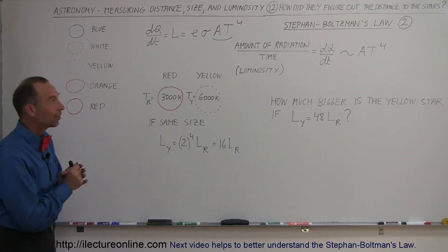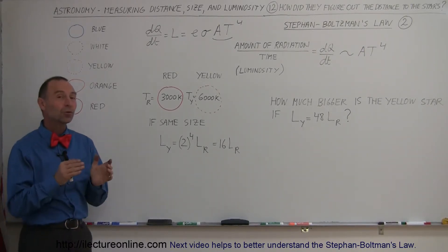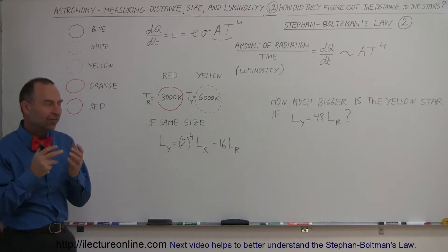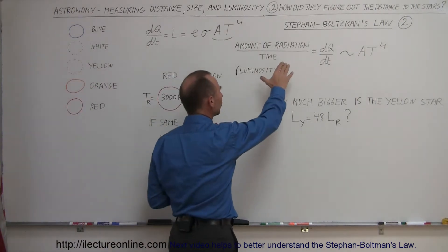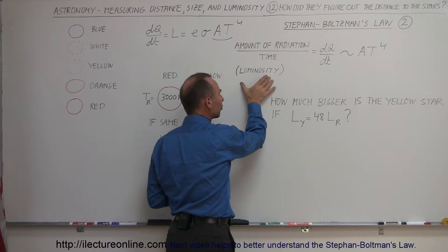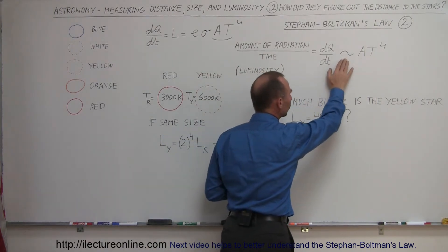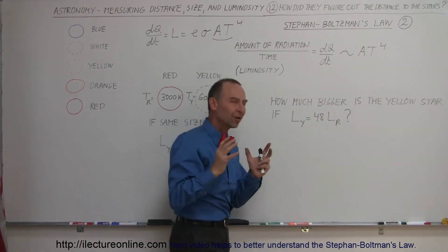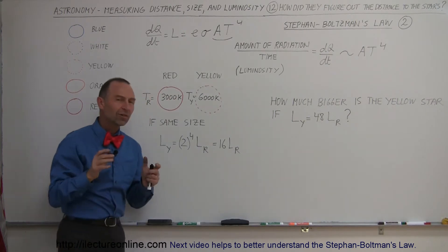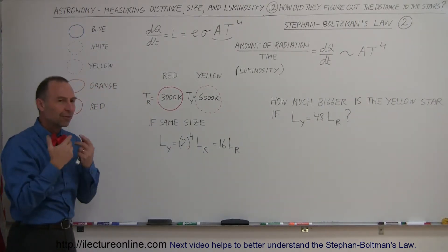Welcome to iLecture Online. Now we're going to take a closer look at Stefan-Boltzmann's Law and that concept where the amount of radiation per unit time, or the luminosity of a star dQDT, is proportional to the surface area of the star and temperature to the fourth power. What does that tell us? What kind of information can it give us?